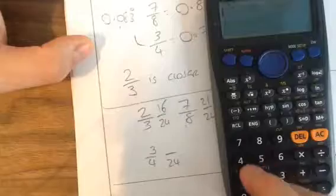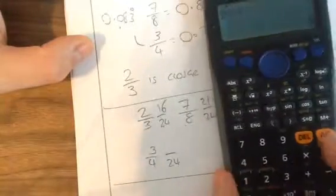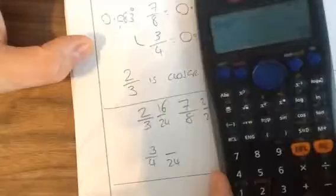4 times 24 is, I might forget, so I have to do 24 divided by 4, which is 6. So, I'll do 3 times 6, which is 18.